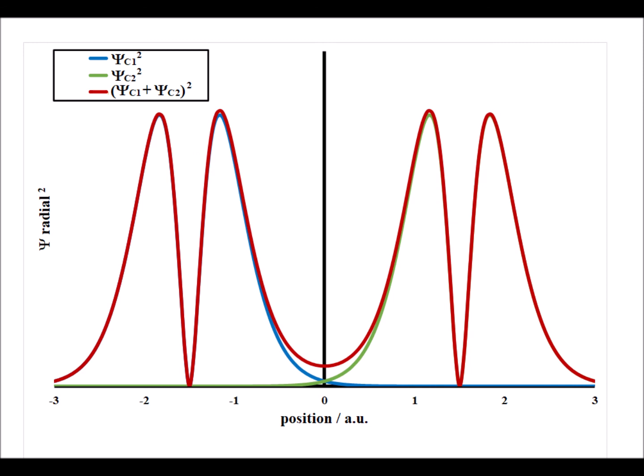Here we plot the electron densities for the atomic orbitals, which are in blue and green. The sigma bonding combination is shown in red. We can see that we do get an increase in electron density between the nuclei, giving us a bonding combination which stabilizes the molecule.